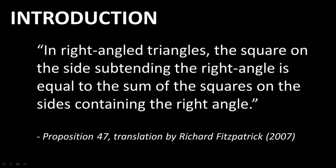Euclid's version of the Pythagorean theorem is devoid of equations because algebra hadn't been invented yet. Rather, it states: In right-angled triangles, the square on the side subtending the right angle is equal to the sum of the squares on the side containing the right angle.